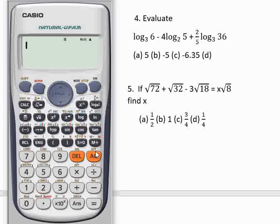And number 4 says evaluate log₃6 - 4log₂5 + 2/5log₃36. You are going to use this type of log, the one that has base, unlike the one you used before that doesn't have base. Whenever a log is written without a base, that means it is in base 10. So we have the base here as 3, you press the forward button and you have 6, forward button again, you have minus 4. Another log base 2, forward button, you have 5, forward button again.